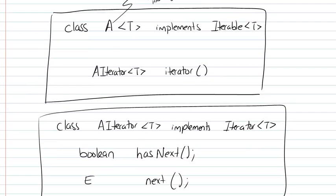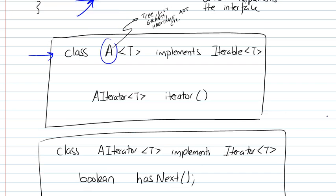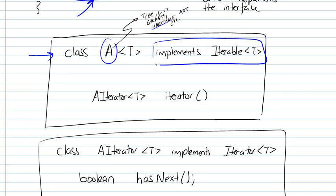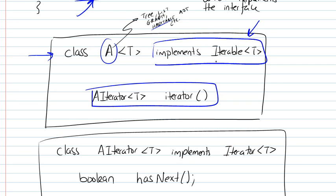Here's an example using the iterable and the iterator. Suppose we define a class A — this could be a list, a tree, a graph, a hash table, some abstract data type which has elements that we want to step through. We're going to say that it implements iterable, defining it as a collection we can iterate through. It must have the iterator function from the iterable interface and must actually implement it with some code.